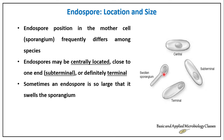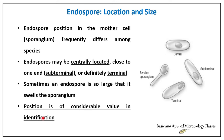The location of the endospore and whether it swells the mother cell is of considerable value when identifying particular spore-forming bacterial species. For example, Bacillus megaterium may have a different spore position compared to Bacillus subtilis. This is an important diagnostic characteristic.